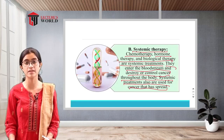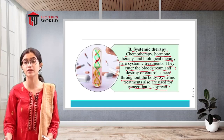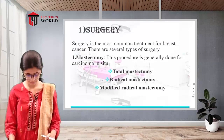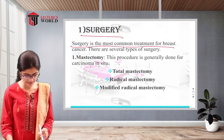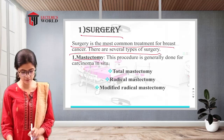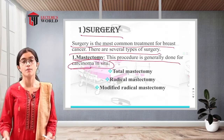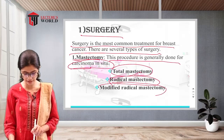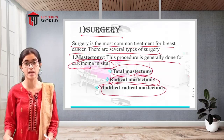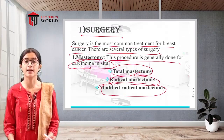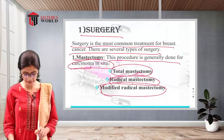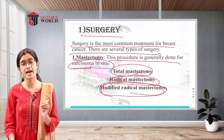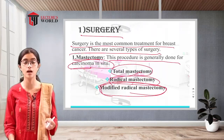Before starting any treatment, informed consent must be obtained from the patient and the effectiveness of the treatment explained. Surgery is the most common treatment for breast cancer. Types of mastectomy include total mastectomy (entire breast removed), radical mastectomy (breast removed), and modified radical mastectomy (breast and lymph nodes removed). The surgery chosen depends on the size and location of the breast cancer.